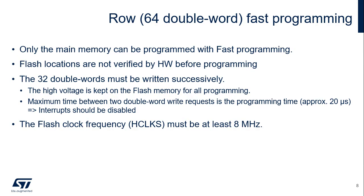A fast programming mode allows programming of 32 double words faster than in standard programming mode. Only the main memory can be programmed in fast programming mode. The flash memory address location contents are not verified by hardware before programming in fast mode. The 32 double words must be written successively, and the high voltage is kept on the flash memory for all programming. The maximum time between two double word write requests is approximately 20 microseconds. Consequently, interrupts should be disabled to ensure that the 20 microseconds between two word write requests is not exceeded.